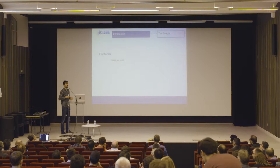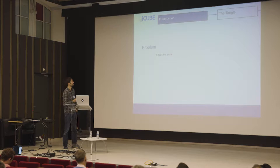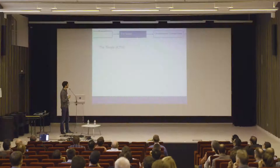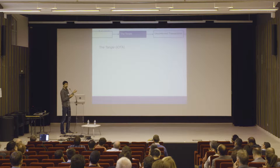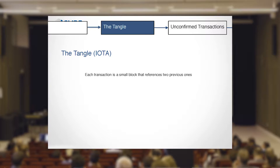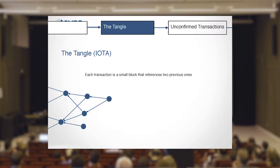That's one problem IOTA and the Tangle tries to solve by replacing the chain of blocks with another data structure. In the Tangle, each block stores one transaction and references two previous blocks instead of one. If you append several transactions like this, you don't get a chain but a directed acyclic graph — a DAG. That's the data structure behind the IOTA cryptocurrency, and it's called the Tangle.